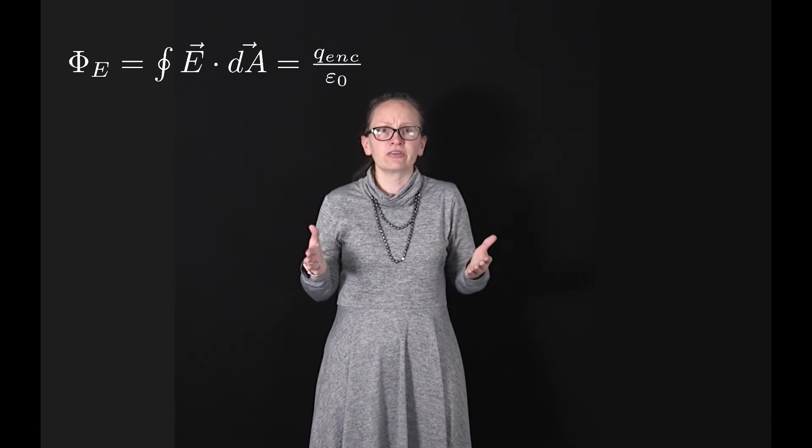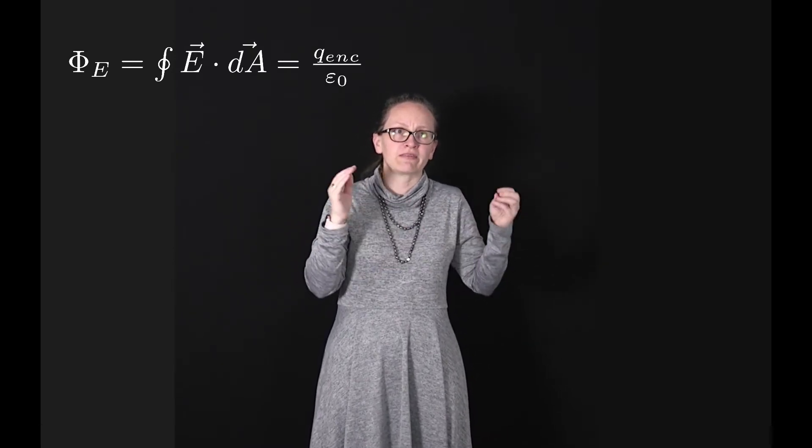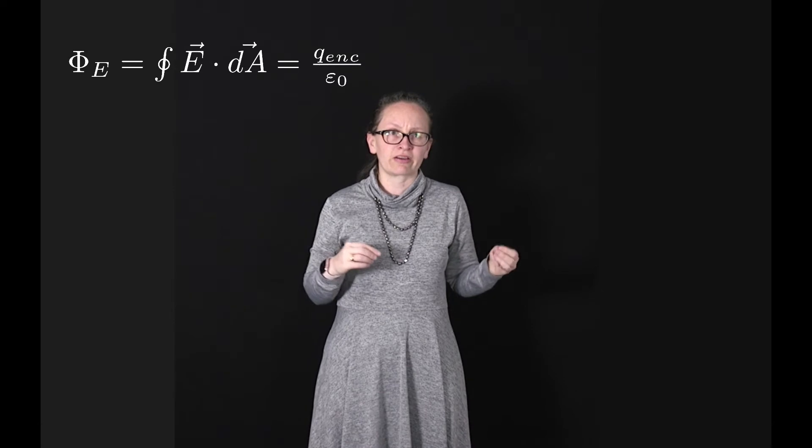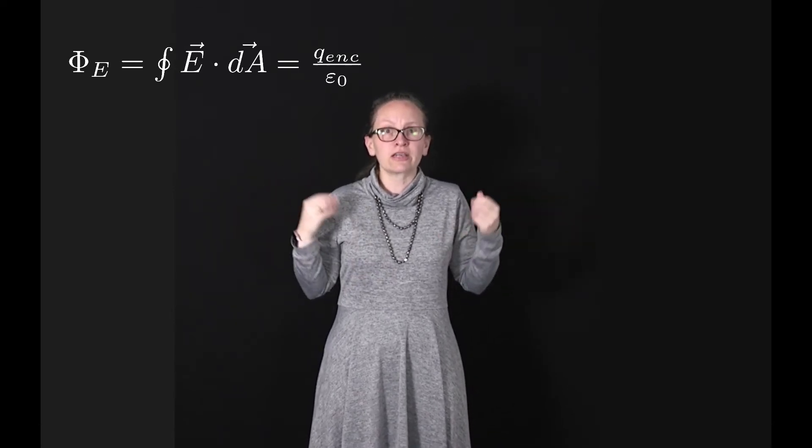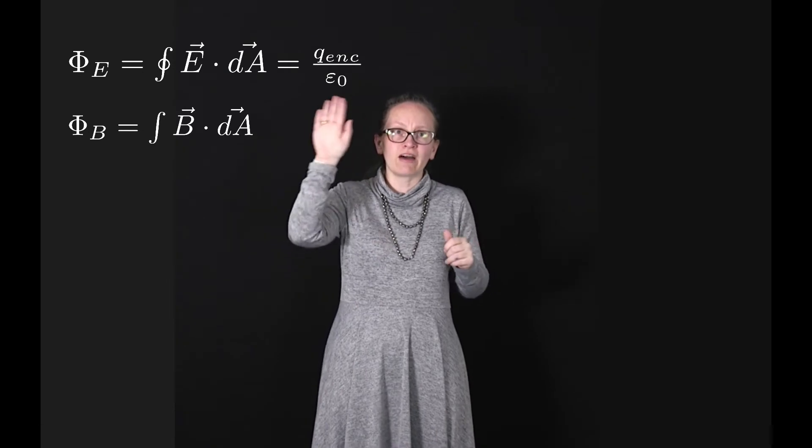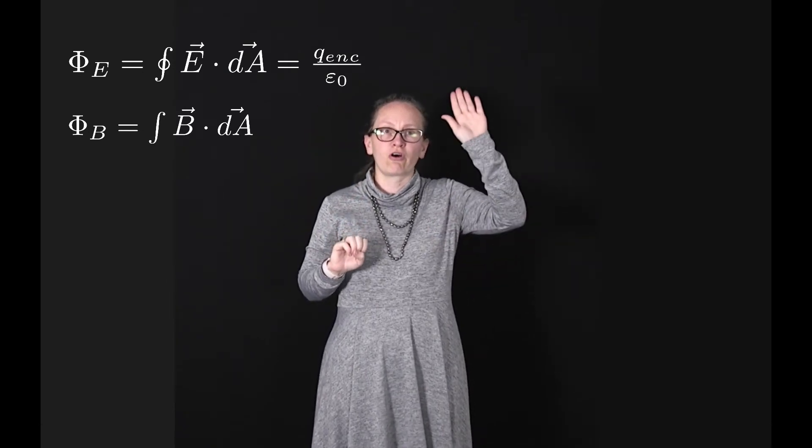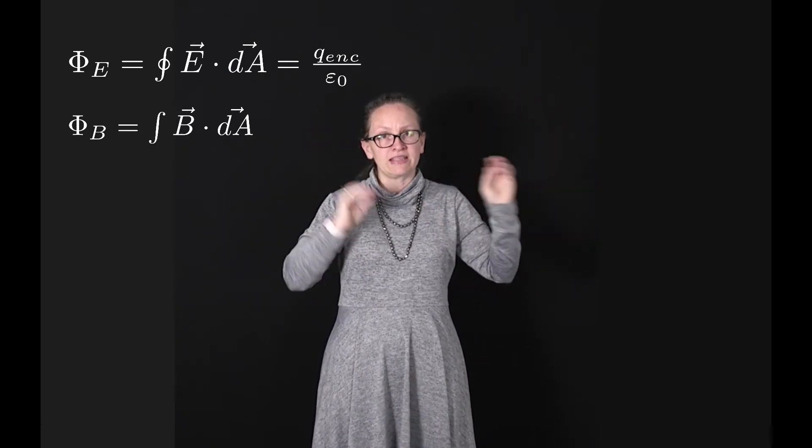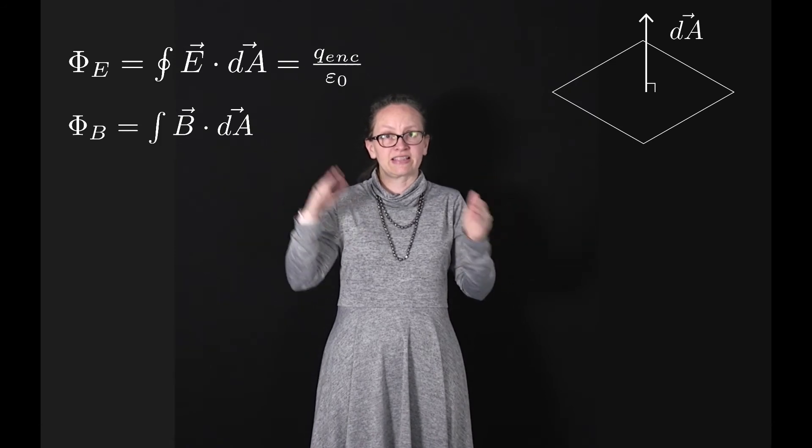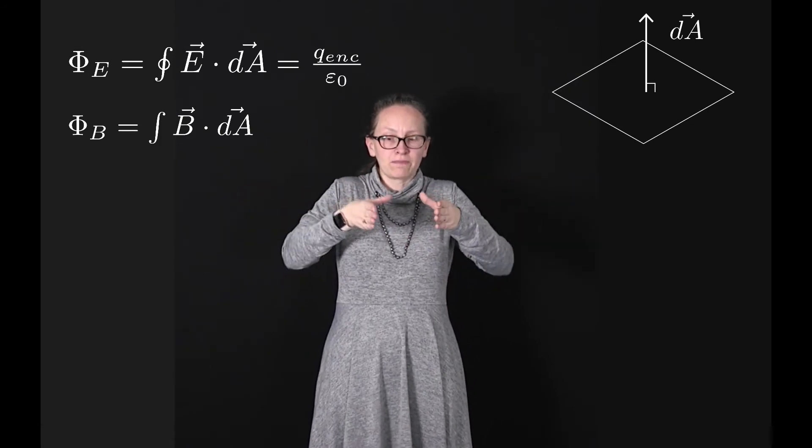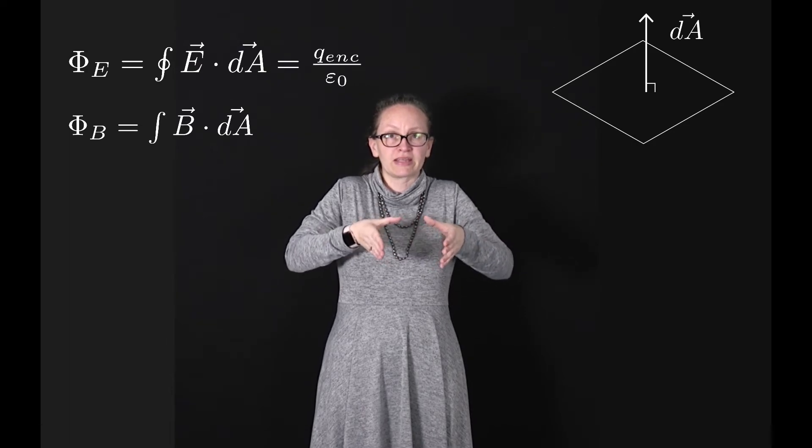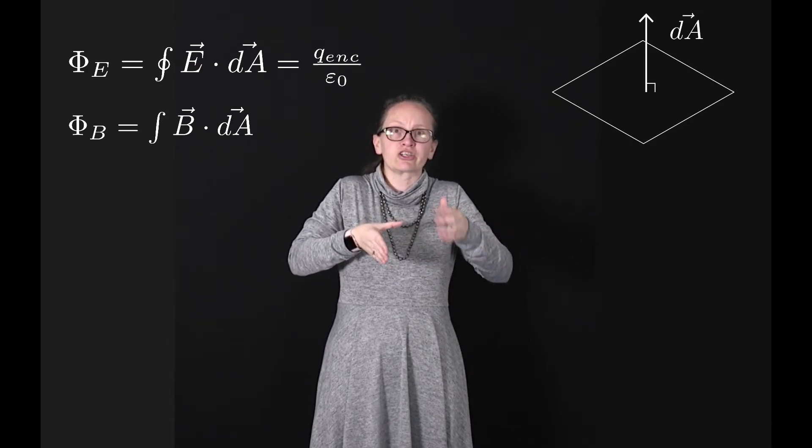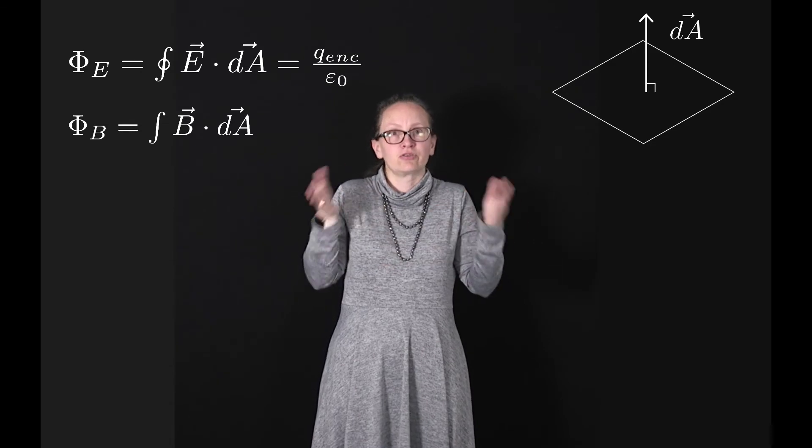Now because magnetic fields can also be modeled with field lines, we can also calculate a magnetic flux for magnetic fields. And so the equation for magnetic flux is φB is equal to the integral of B dot dA, where dA in this case has the same meaning as in the electric field case. The magnitude of dA is equal to the surface area of a little increment that we're considering, and the direction is perpendicular to that surface.